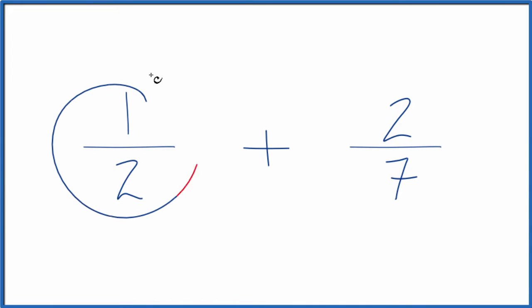If you're asked to add the fractions one-half plus two-sevenths, here's how you do it. What we want to do is get the denominator for both of these fractions to be the same.